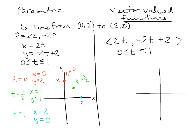What the parametric equations are doing is: as time goes on, starting at t equals 0, it traces out the line point by point. A little particle traveling on this line starts at (0, 2) and moves down along the line until it hits (2, 0). That's parametric equations — you've seen that before.